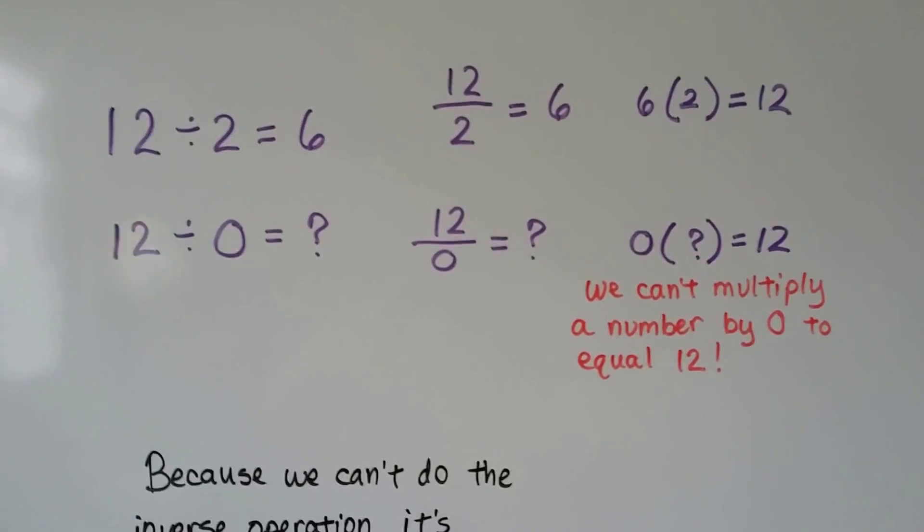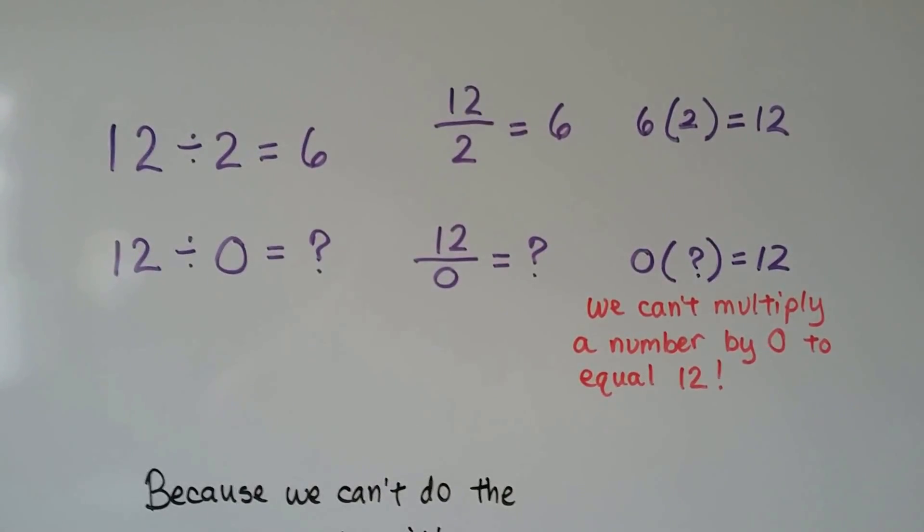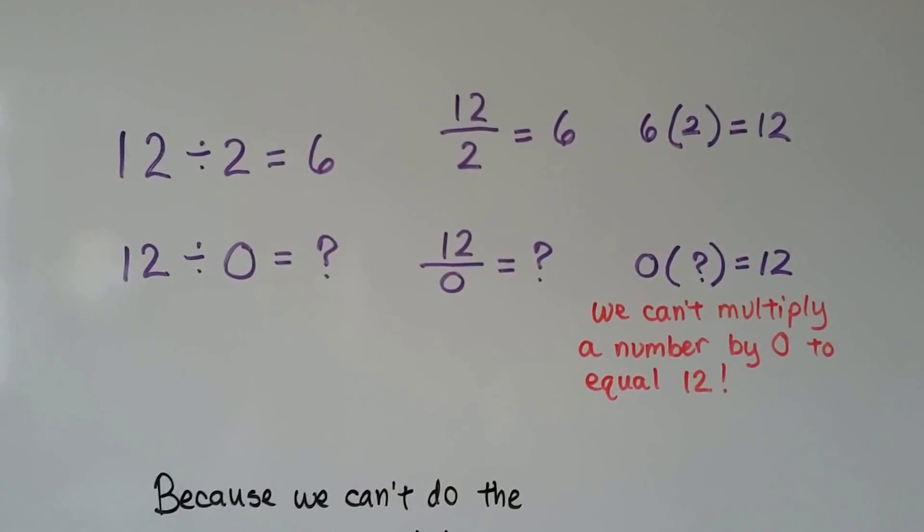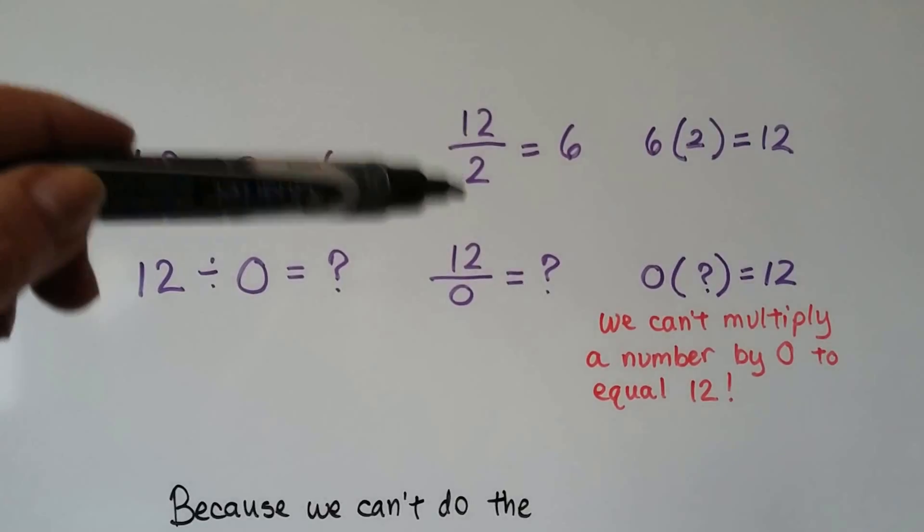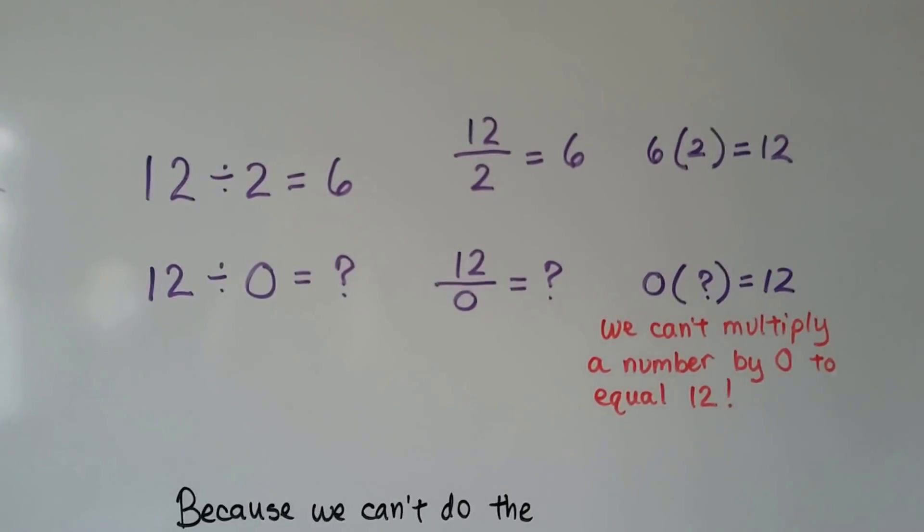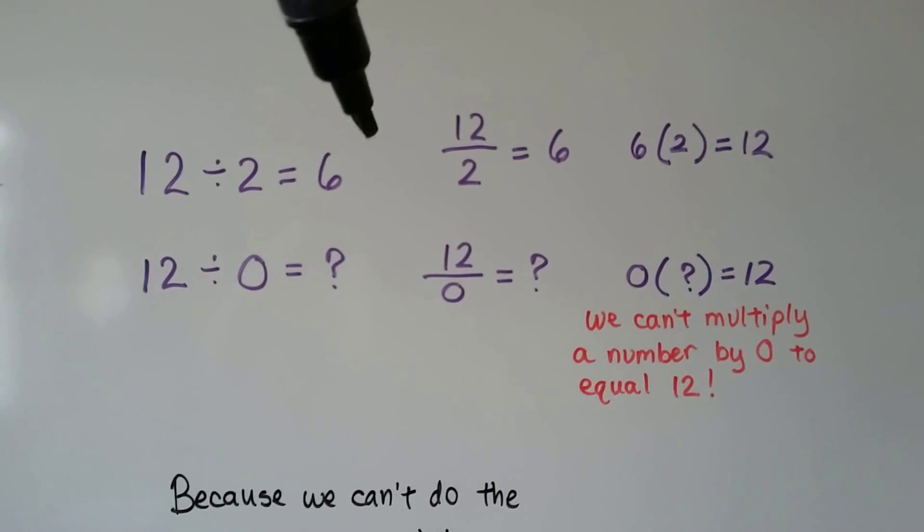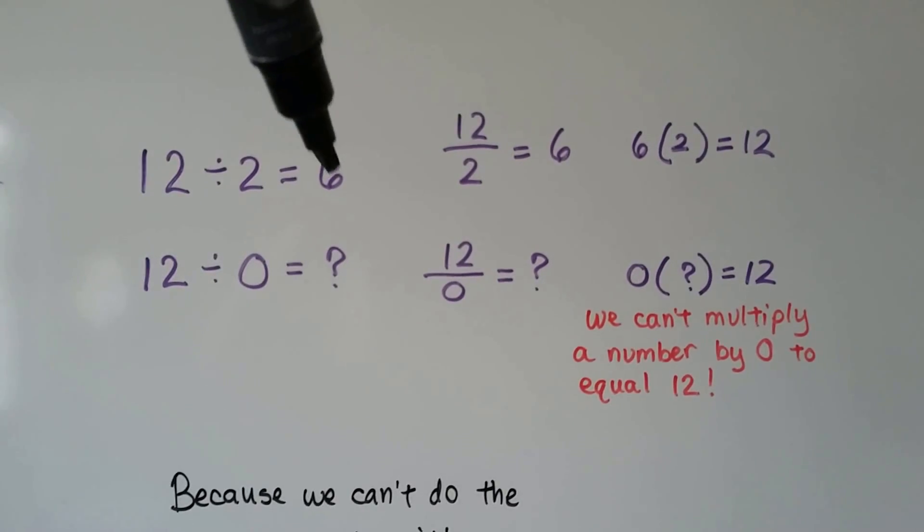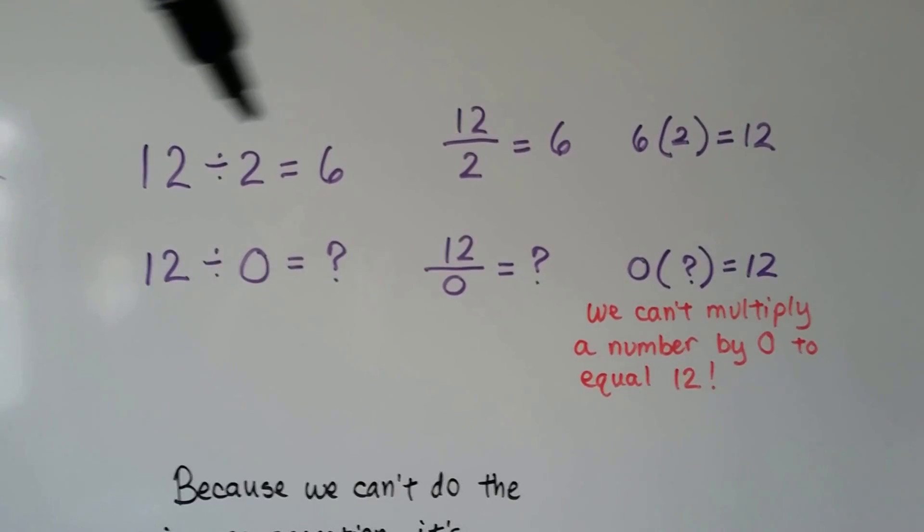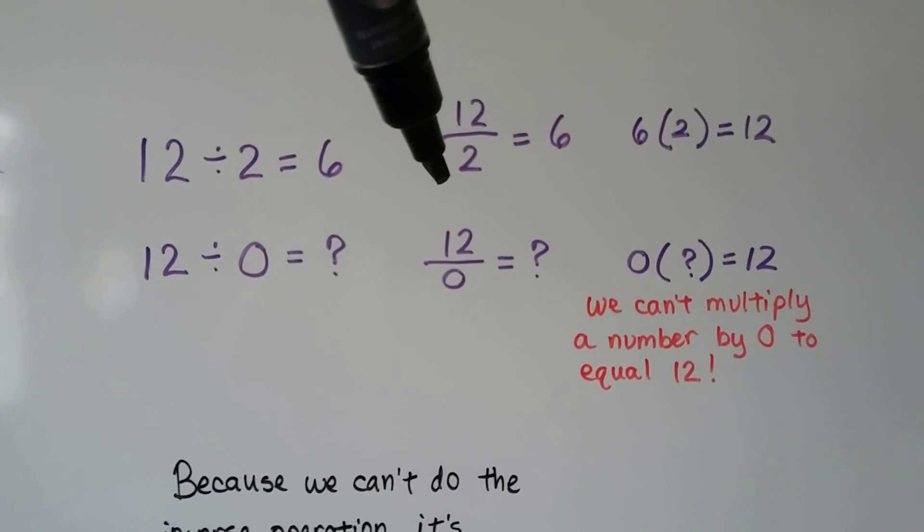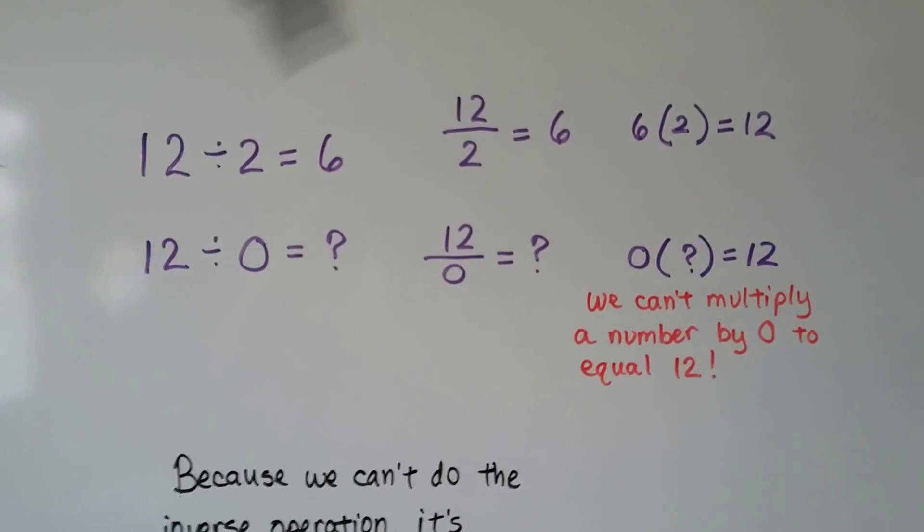Here's two examples. If we have 12 divided by 2, it'll equal 6. We have 6 for the quotient. We can write it as a rational number, because fractions are little division problems. If we simplify this, it's going to be 6. Well, we can go and do the inverse. We can do 6 times 2 equals 12. The quotient times the denominator is going to equal the numerator.